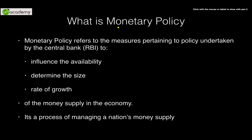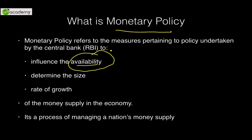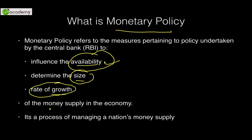The formal definition of monetary policy focuses on three things. First is the influence — the availability of money supply in the economy. What we mean by availability of money supply is what access to money people have; if people are able to access money from commercial banks, that means money is available for the public. Hence, influencing the availability of money determines the size of money in the market, which eventually determines the rate of GDP growth. So availability, size, and growth of money supply in the economy is determined by the monetary policy framework of the RBI — this is a process of managing the nation's money supply within the economy.